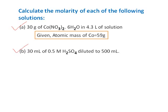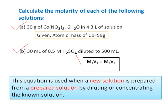For the second problem, you are already given a solution whose strength is 0.5 molar and volume is 30 mL. This is diluted to 500 mL and you must calculate the new concentration. For this type of problem, we use the formula M₁V₁ = M₂V₂. This equation is used when a new solution is prepared from a known solution by diluting or concentrating it.